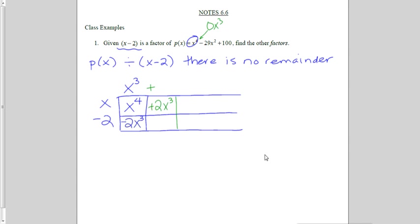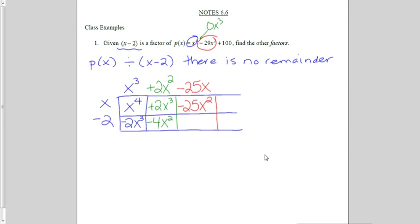I can figure out what must have been up top so that when I multiply it by x, I get 2x cubed — I'd need a 2x squared. Then 2x squared times negative 2 is negative 4x squared. Going back to my original polynomial, I'm supposed to have negative 29x squared. I currently have negative 4x squared, so I need another negative 25x squared. If I have negative 25x squared on the inside, what must I have multiplied x by? It must be negative 25x. Then negative 25x times negative 2 is positive 50x.